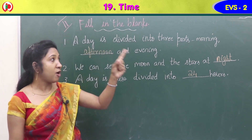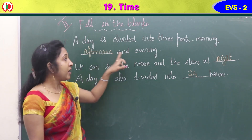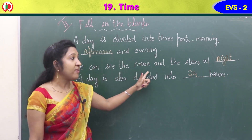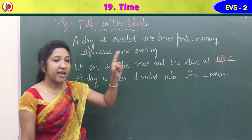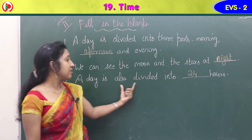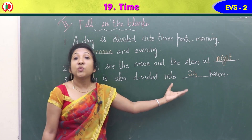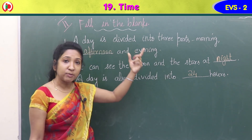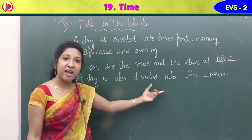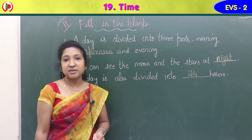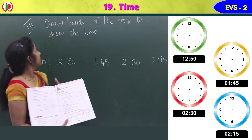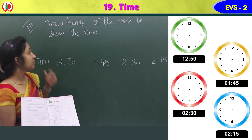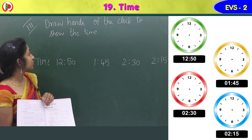Third fill-in: a day is also divided into — how many hours? A day is also divided into 24 hours. So the three answers are: morning, afternoon and evening; at night; and 24 hours.